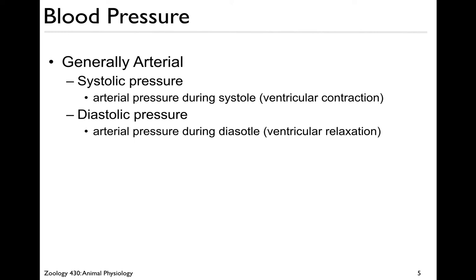Blood pressure, as we measure it, is usually arterial pressure, as we discussed last time. We have systolic pressure, which is the arterial pressure during ventricular contraction or systole, and diastolic pressure, which is the arterial pressure during ventricular relaxation.